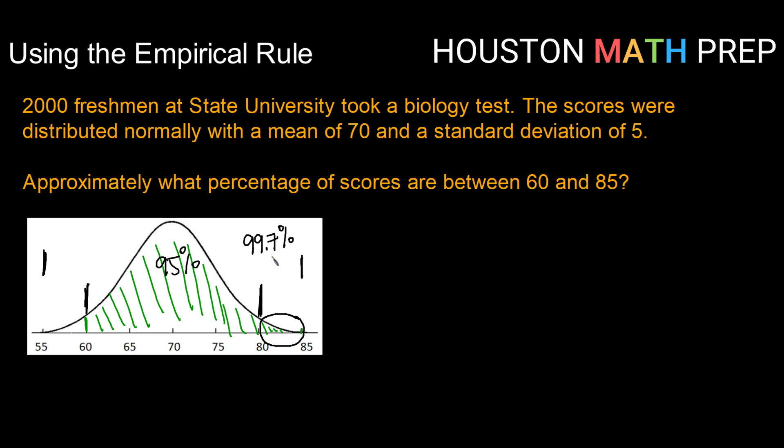So I can figure out how much that represents by realizing that it would be half of the difference between 99.7% and 95%. So taking the difference between 99.7% and 95%, which gives me 4.7%, and then realizing I only have half of that, since the other half is over here, if I divide that by two, that tells me that there's 2.35% living right there. So I have my 95% from 60 to 80, plus this additional 2.35% that is between 80 and 85. So in total, between 60 and 85, I have 95 plus 2.35, or 97.35%.